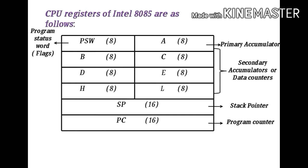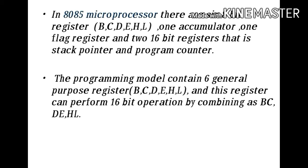By observing this table you can understand that there are two different types of registers. First is 8-bit register and second is 16-bit register. Registers A (accumulator), flag register, stack pointer, and program counter are called special purpose registers. Registers B, C, D, E, H, and L are called general purpose registers. In 8085 there are six 8-bit registers B, C, D, E, H, L, one accumulator, one flag register, and two 16-bit registers — stack pointer and program counter.